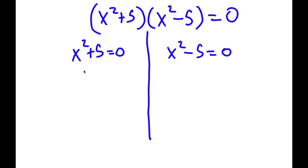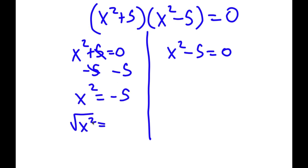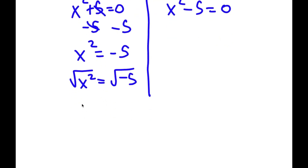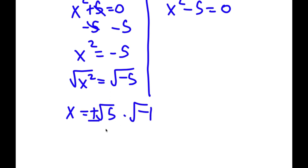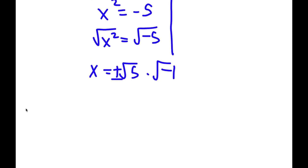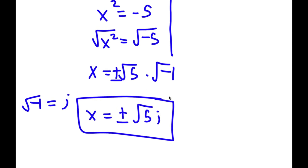For x squared plus 5 equals 0, I subtract 5 on both sides to get x squared equals negative 5. Taking the square root on both sides, the square root of negative 5 can be written as the square root of 5 times the square root of negative 1, giving plus or minus square root of 5 times i. So x equals positive or negative square root of 5i — these are two solutions.